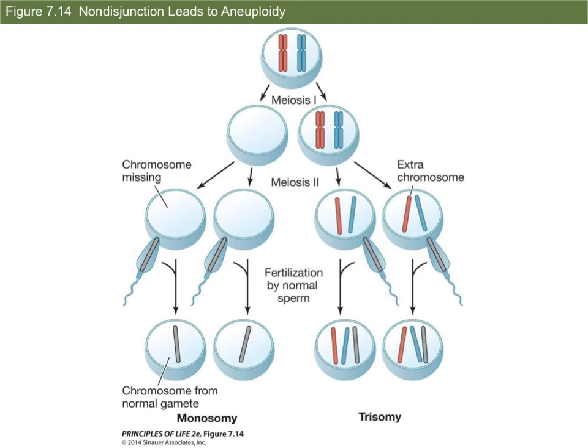When this happens, you either have zygotes missing one chromosome or a zygote with an additional chromosome. If the zygote has an extra one, we call that a trisomy; if they're missing one, we call that a monosomy. Each set should have two — one from mom and one from dad. If they get two from one parent and one from the other, they end up with three — a trisomy. If they only get one from one parent and none from the other, they have one — a monosomy.